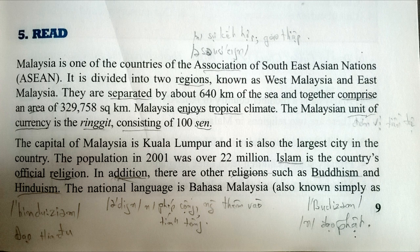Malaysia enjoys a tropical climate. The Malaysian unit of currency is the ringgit, consisting of 100 sen. The capital of Malaysia is Kuala Lumpur and is also the largest city in the country. The population in 2001 was over 22 million.